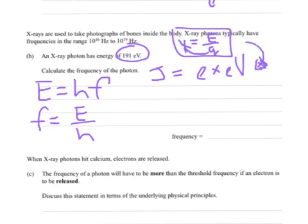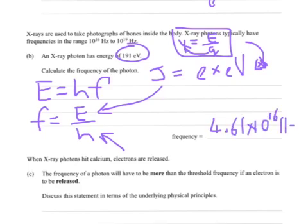So, how are we going to do that? Charge on an electron is 1.6 times 10 to the minus 19 coulombs, and the electron volt energy is given up there. So, we just multiply the two together, and then we substitute that value into here, divide by Planck's constant, which is 6.63 times 10 to the minus 34, and we should get a frequency of 4.61 times 10 to the 16 hertz. Fantastic.